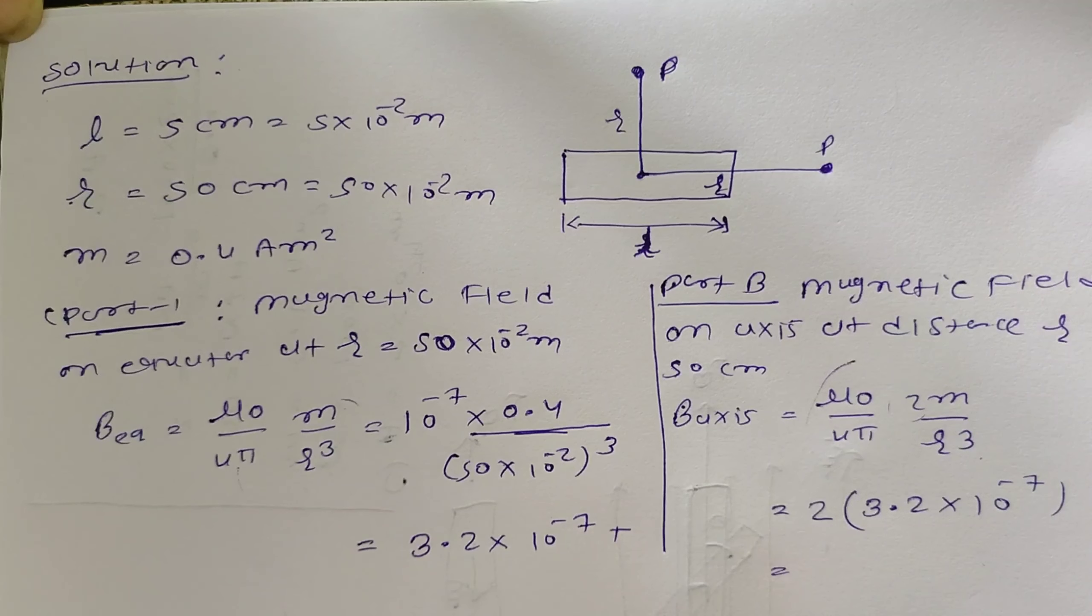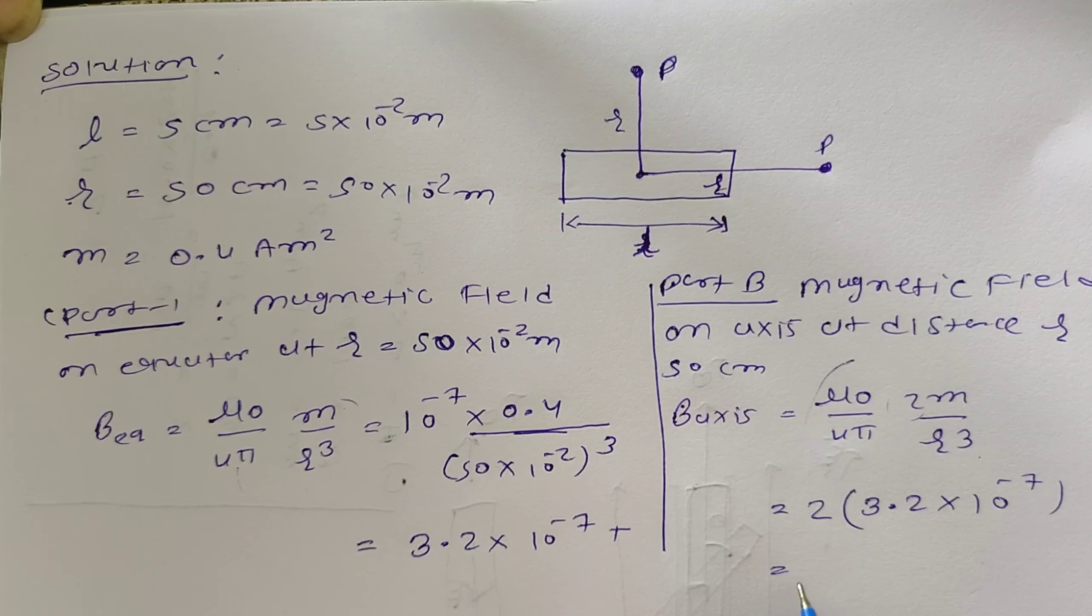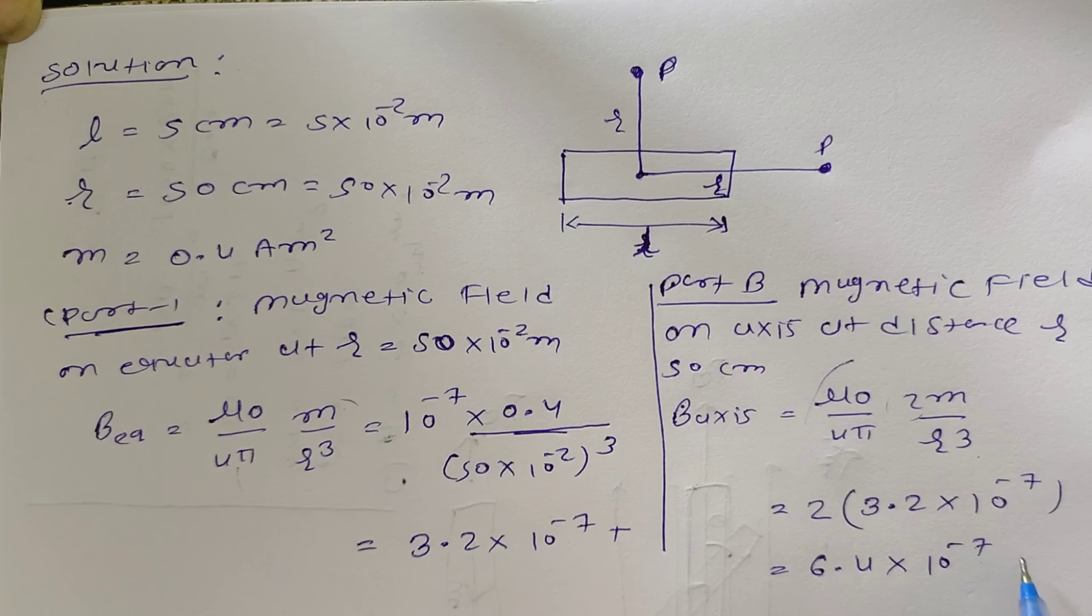The axis magnetic field is 6.4×10⁻⁷ tesla.